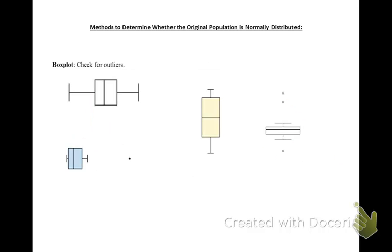An even better method than dot plots or histograms is box plots. In box plots, again, you want to check for outliers. If the box plot for your data set looks like this one, you could say that your data is from an originally normal population.